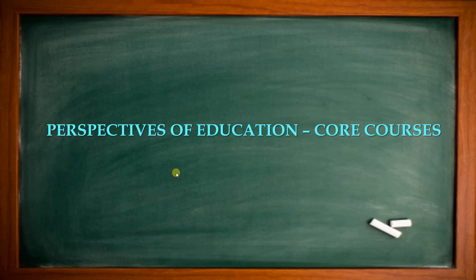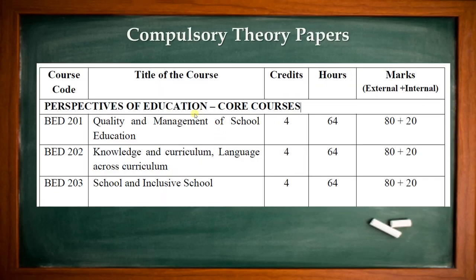Let us see the core courses, which we can call compulsory papers. There are 3 compulsory papers for second year B.A.D. BAD 201 is quality management — quality and management of school education. BAD 202 is about knowledge, curriculum, and language across the curriculum. BAD 203 is about school and inclusive school. These 3 courses are compulsory for everyone, with 4 credits each and an 80-20 marks pattern — 80 university exam marks and 20 internal marks including some practicals.